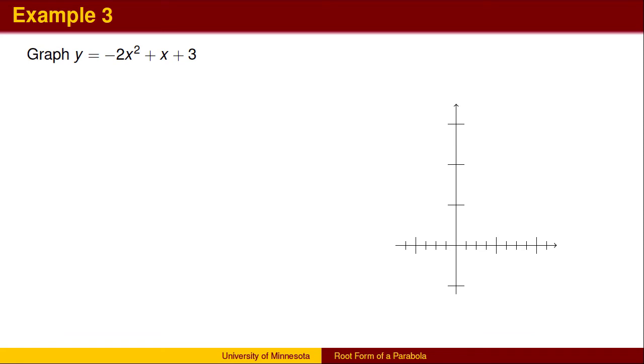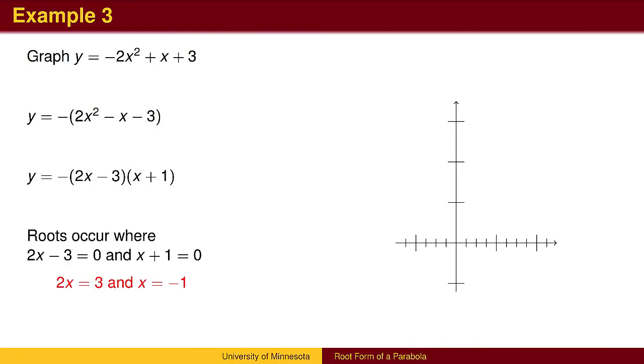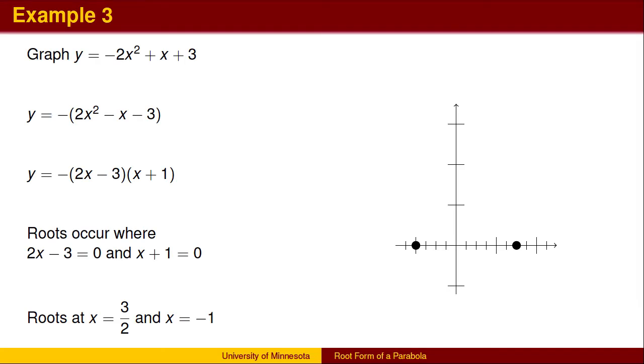Here is a third example. It is easiest if we factor out the negative sign, and then factor the polynomial inside the parentheses. The x-intercept will occur when y equals 0, which by the zero product property occurs when one of the factors equals 0. We can solve these two equations separately to find the roots, which will be at 3 halves and negative 1.